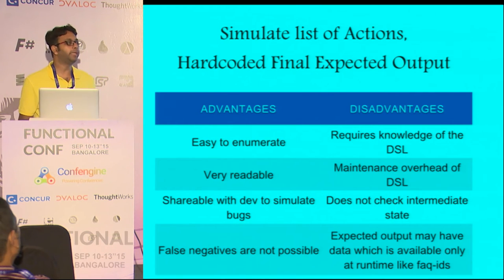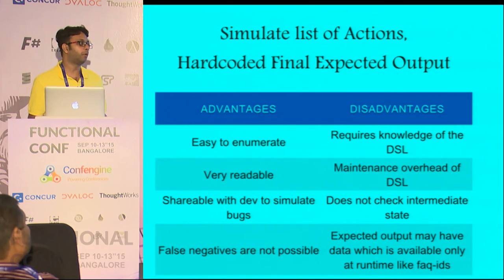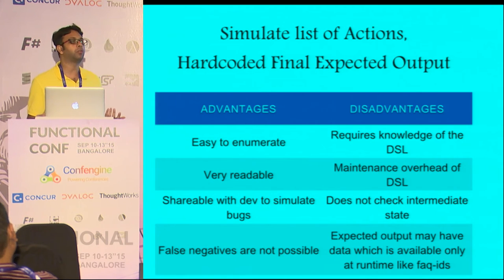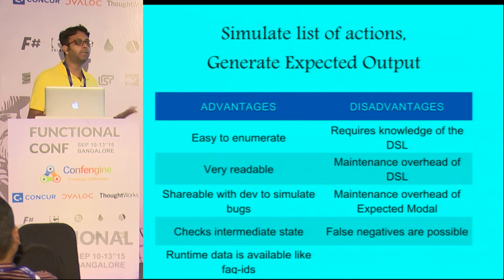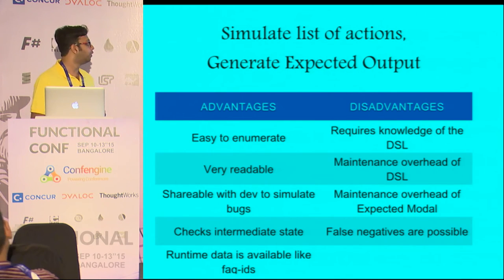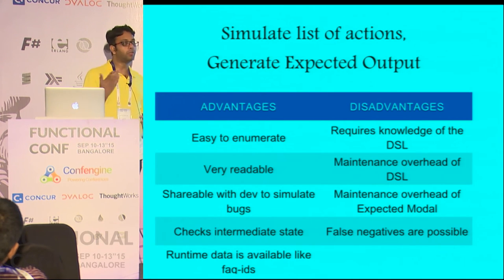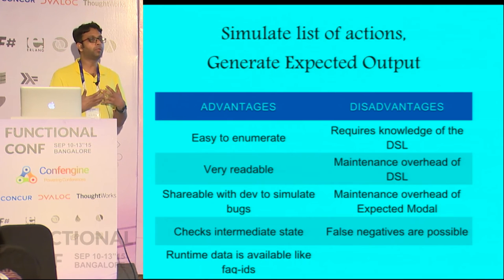The problem is you need to maintain this DSL and teach people how to write it. And expected output may have some runtime values like FAQ IDs which you cannot hardcode. That can be solved by generating the expected output — if you have that, you can even work with runtime values. But there can be false negatives if your model is also incorrect and the implementation is also incorrect in the exact same way — you may both miss certain bugs.